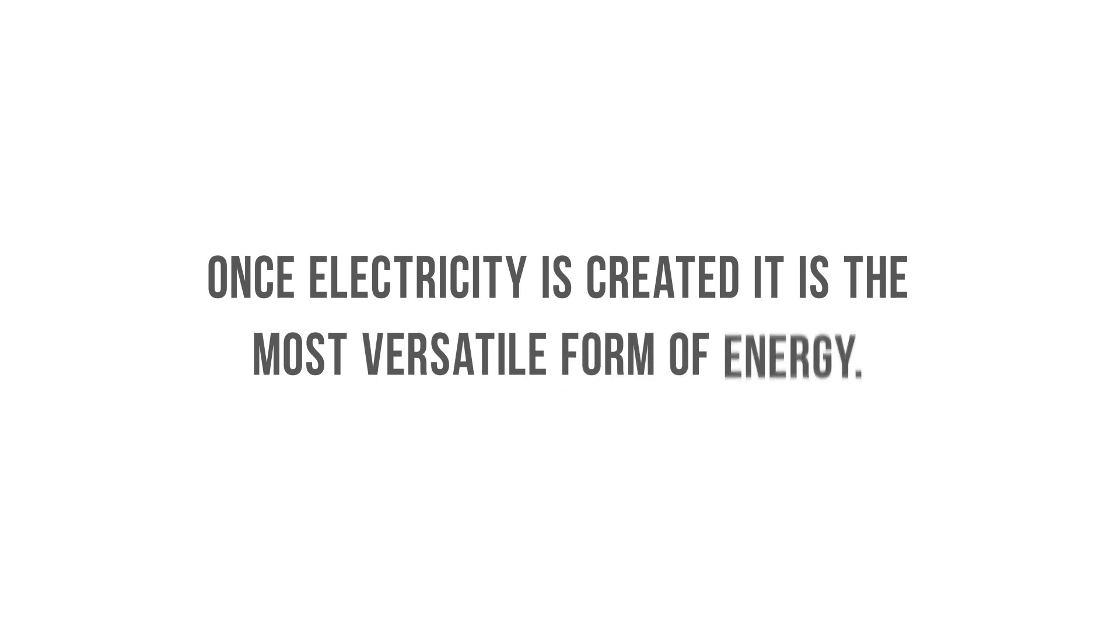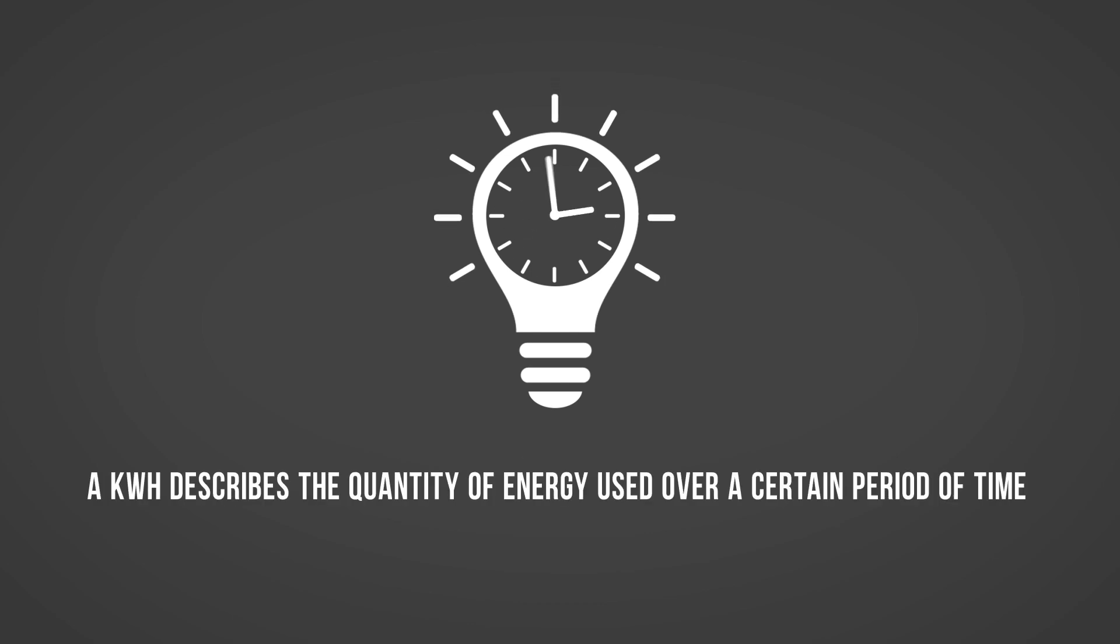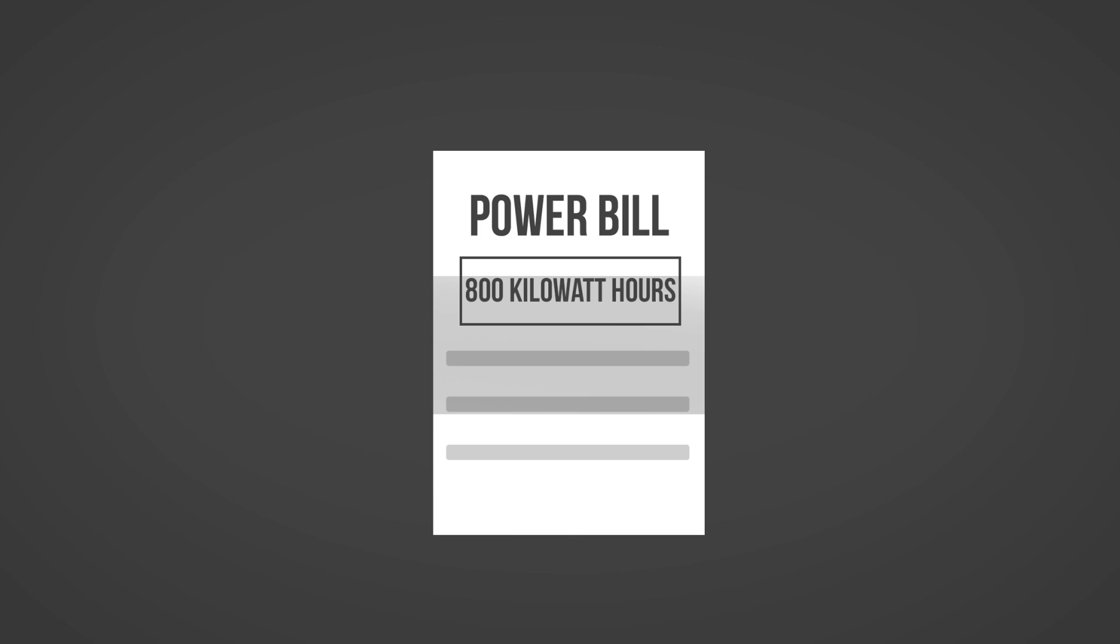Once electricity is created, it is the most versatile form of energy. The rate at which electricity is produced is referred to as a watt. A kilowatt hour describes the quantity of energy used over a certain period of time and is the measure you would see on your power bill.